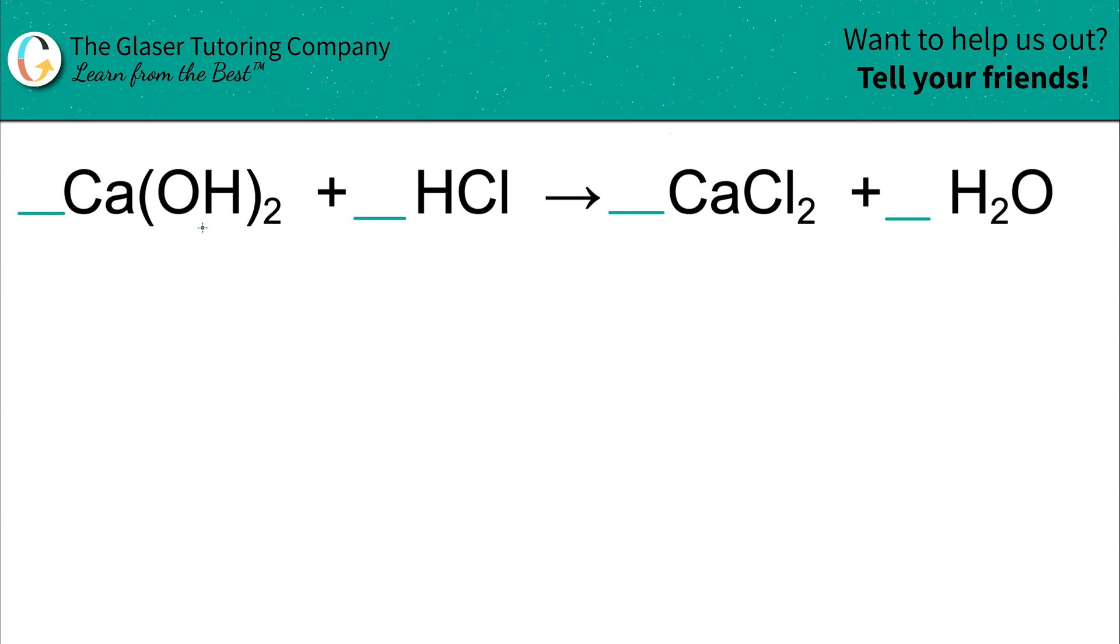I'm going to skip it because I really only want to find, in the beginning, one element or one polyatomic ion in one of the compounds on the left, and that same thing on the right-hand side in only one of the compounds.